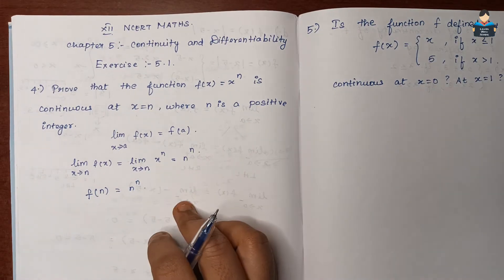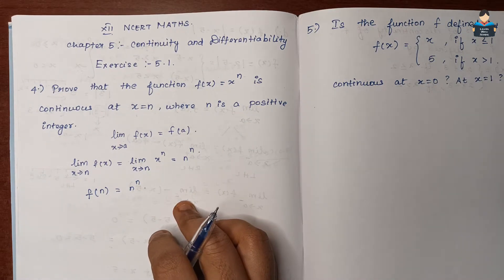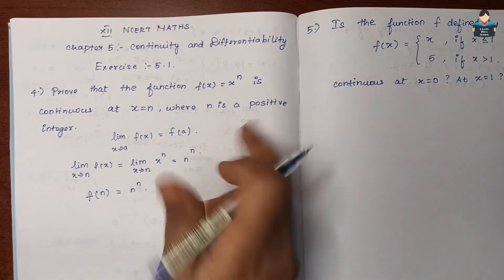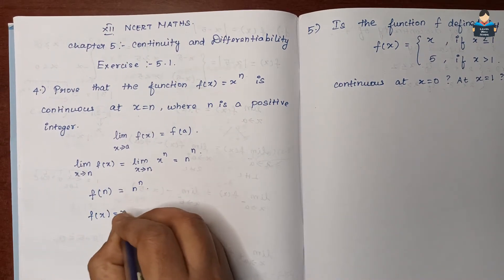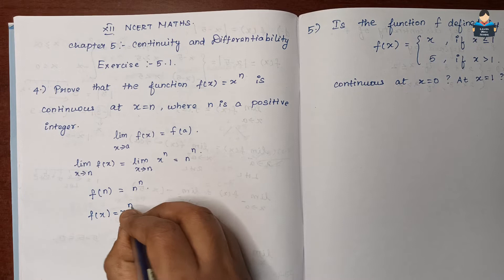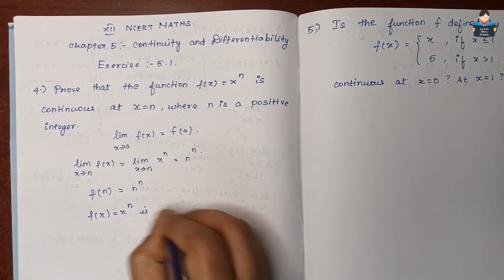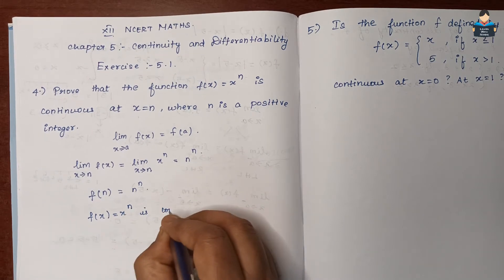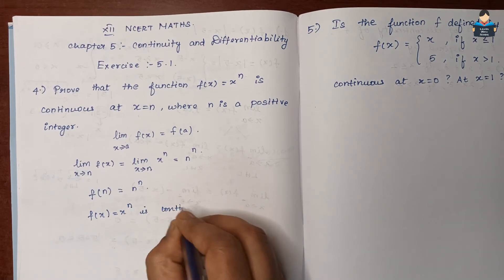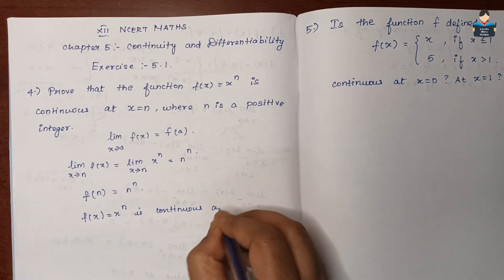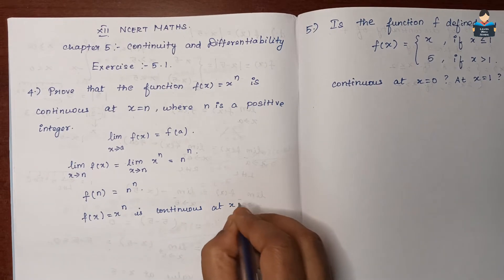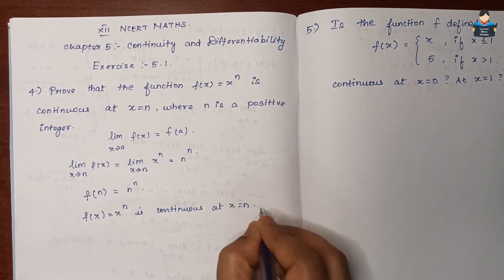The limit value and function value are the same. Therefore, the function f(x) = x^n is continuous at x = n.